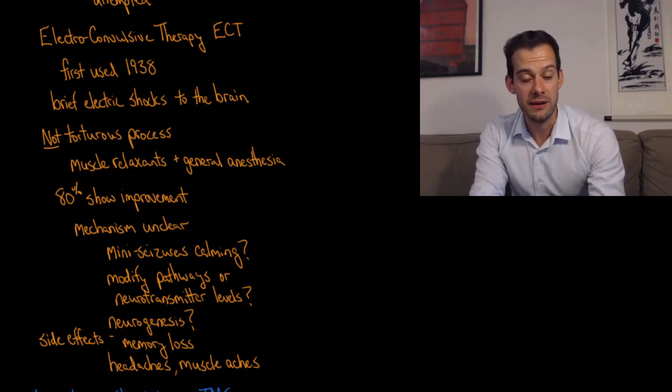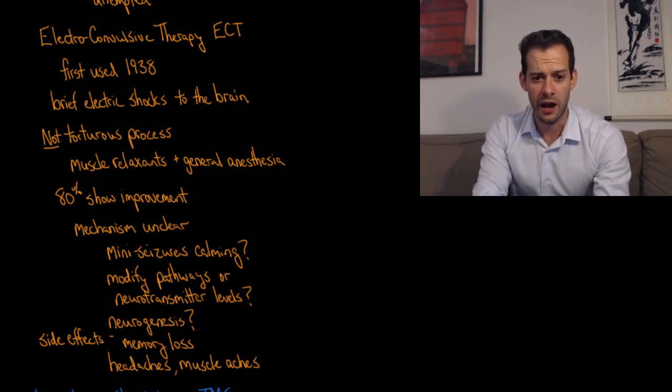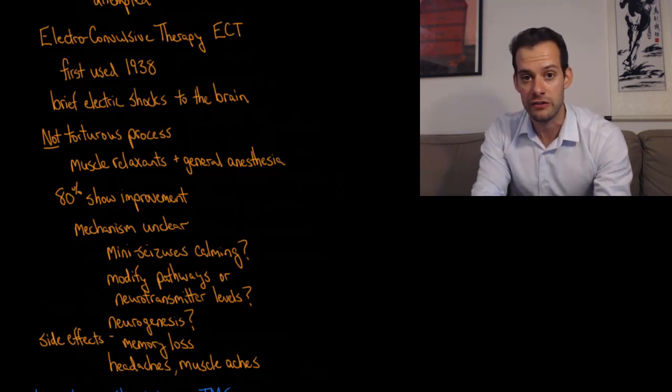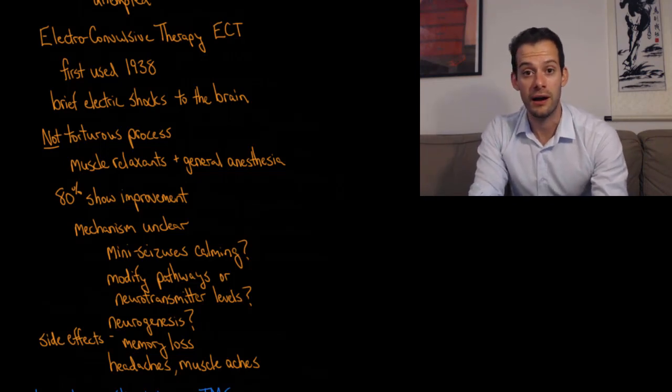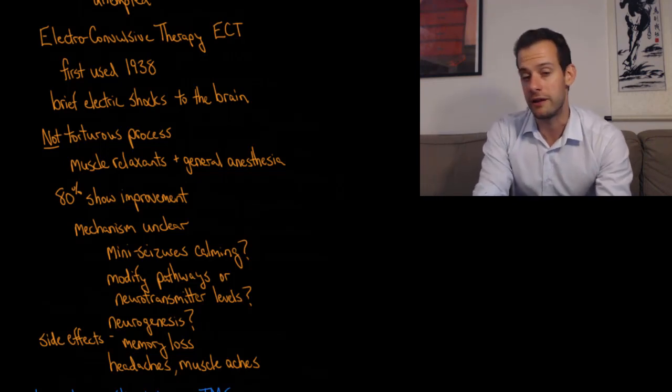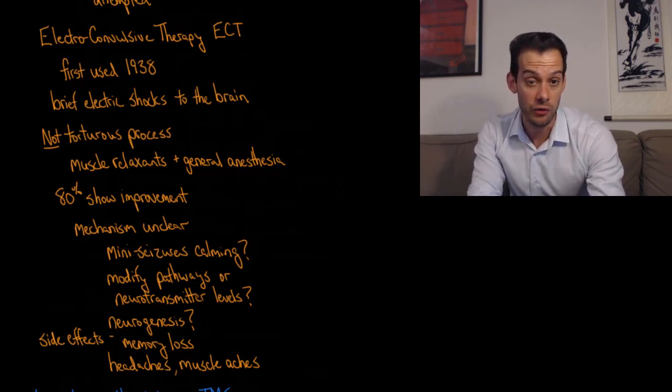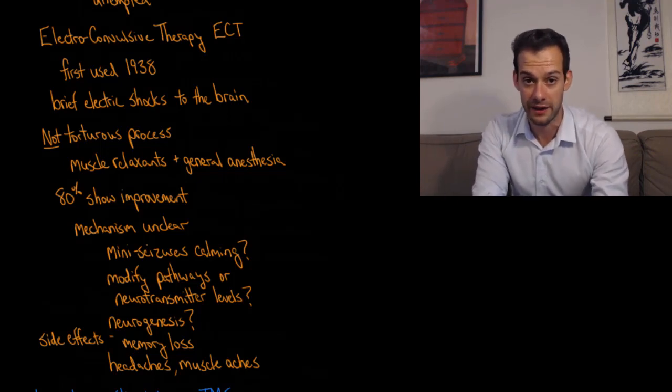One theory is that these mini seizures that are caused in the brain by this electrical pulse might be calming certain brain regions or reducing their activity. Another possibility is that it's modifying certain pathways by stimulating certain neurons in the brain—those pathways are being modified, or release of neurotransmitter levels are being adjusted in some way as a result of this mini seizure that occurs. It's also possible that this stimulation aids in the process of neurogenesis, which is the growth of new neurons that I also mentioned when talking about antidepressant medications.